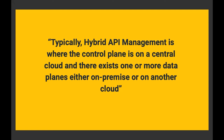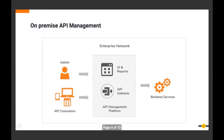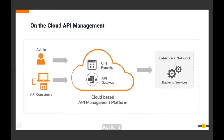When an API is live and consumers are invoking it, the component handling that is the API gateway — along with components that do the rate limiting and so on. This goes into the data plane. So we have two planes when we talk about an API management deployment. In a hybrid API management deployment, we basically talk about the control plane being centrally on a cloud, and then one or more data planes which can either be on-prem or on a cloud.